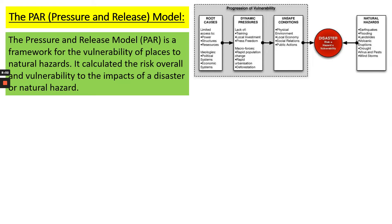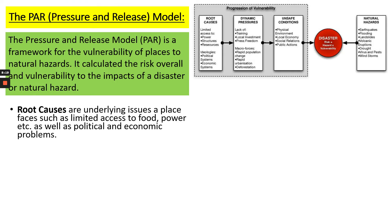The first model to look at is the power model — the pressure and release model. The key thing with the power model is it looks at the vulnerability of a place and how that relates to how it might cope in a disaster. The first part is root causes of vulnerability: underlying issues in a place like limited access to food, power, poverty, political issues and economic issues. All of these are root causes of vulnerability, and vulnerability can therefore be high or low.